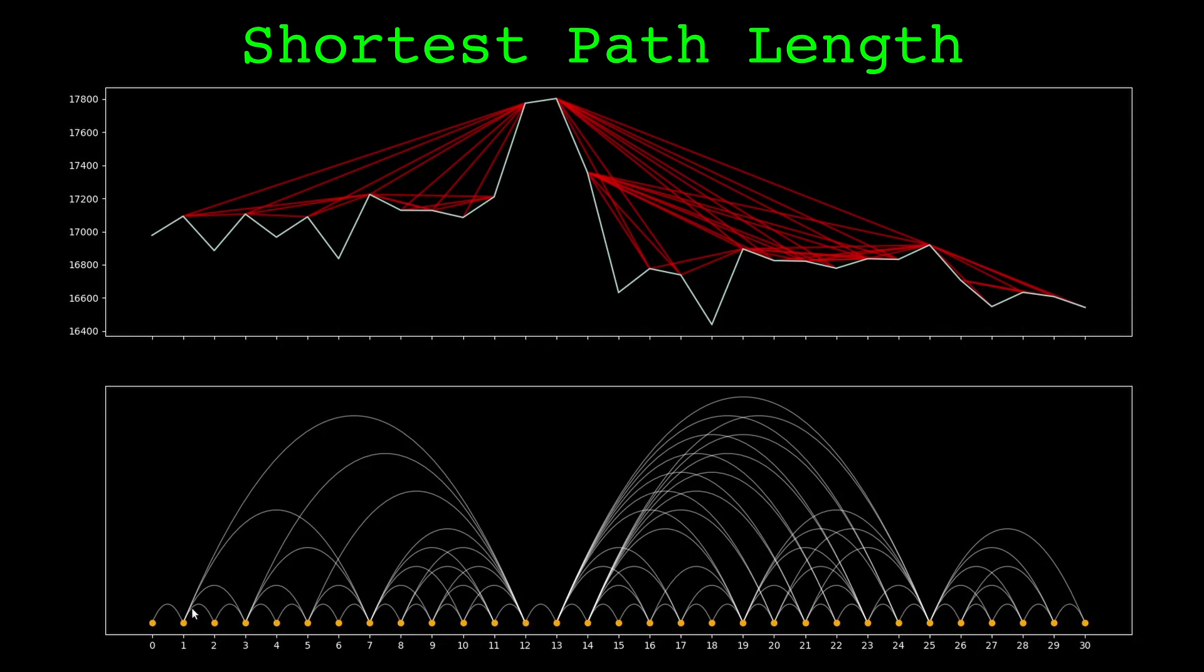The shortest path length between node 1 and 13 is 2, because you'd have to go from node 1 to 12, and then from node 12 to 13. And the shortest path length between node 1 and node 25 is 3, because you'd have to go from node 1 to 12, 12 to 13, and then 13 to 25. Finding the shortest path length between each pair of nodes in the graph, then averaging them gives the average shortest path length.